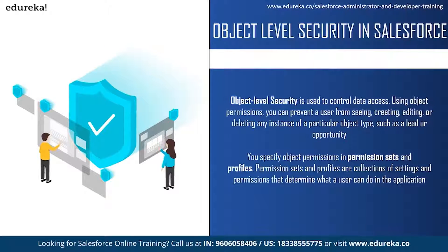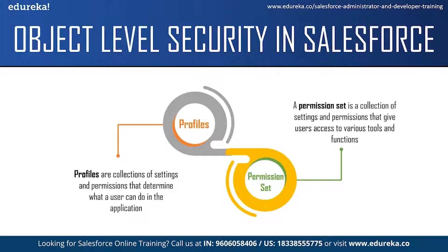Object permissions are not only about restricting access — you can also grant access to certain users to see and edit objects. There are two ways to set object permissions: profiles and permission sets. Profiles are a collection of settings and permissions determining what a user can do and access. For example, a sales representative will have a sales profile giving access only to the objects needed for daily tasks.